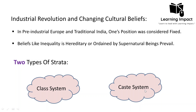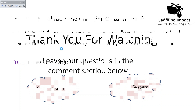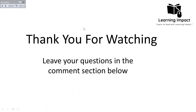This was all about social stratification — the three types of societies (egalitarian, rank, and stratified), how they moved from one to another, and how the industrial revolution brought change in cultural beliefs affecting social stratification.